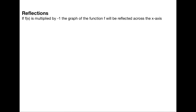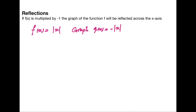The next type of transformation is reflection. Here in this video, we will consider one type of reflection — reflection about the x-axis. If you multiply f(x) by negative one, the graph of f will be reflected across the x-axis. Let's say f(x) = |x|, and we graph g(x) = -|x|. The relation between g and f is that g(x) is just f(x) multiplied by minus one, so the graph of g is a reflection of the graph of f across the x-axis.